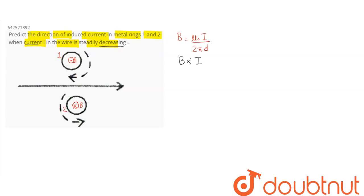To predict the direction of induced current, we need to see the magnetic flux, whether it increases or decreases. Magnetic flux can be written as B·A, that is B·A·cos(0°).